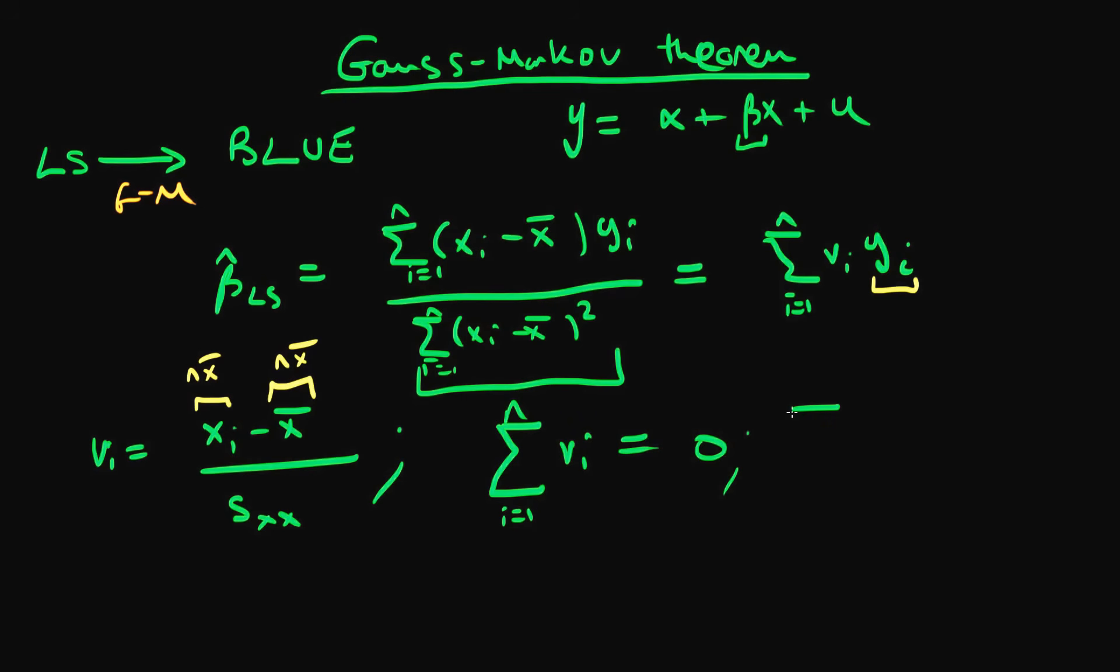And when I also sum i over vi squared, which is going to be useful as well, I'm going to get something which is the sum of xi minus x bar all squared all over SSX squared, which is just going to condense down to some sort of number 1 over SSX which is going to be greater than 0.